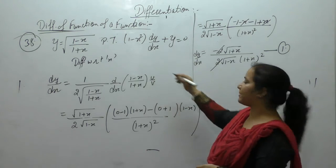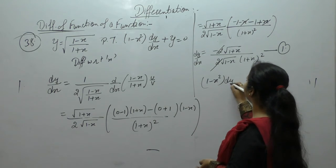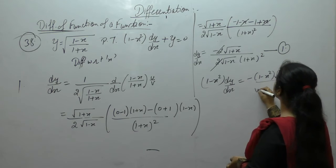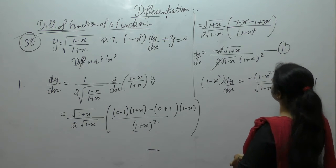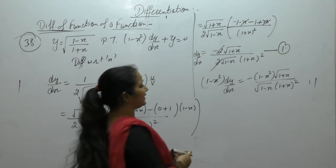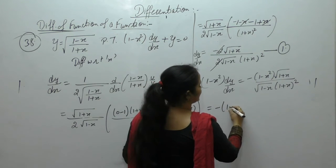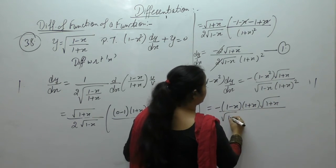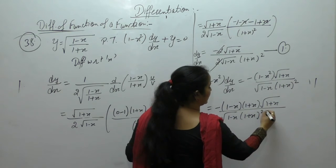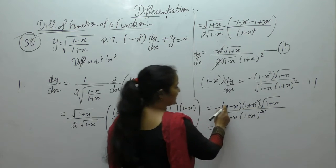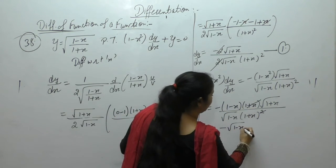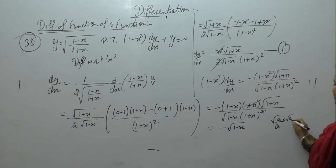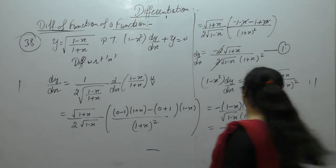Now multiply this by (1 minus x²): (1 minus x²) dy/dx equals (1 minus x²) times √(1 plus x) over √(1 minus x) times (1 plus x)². We write 1 minus x² as (1 minus x)(1 plus x), over √(1 minus x) times (1 plus x)². This cancels. Using the property: minus a over √a equals √a, and √a over a equals 1 over √a by rationalizing.